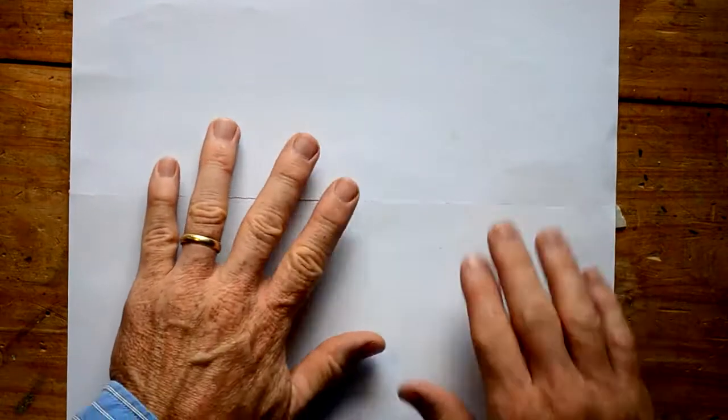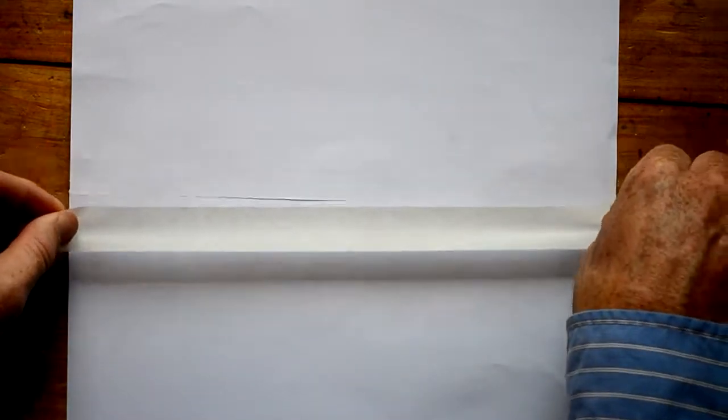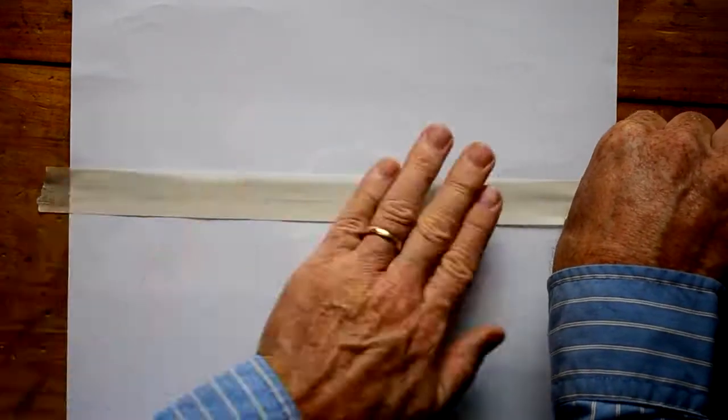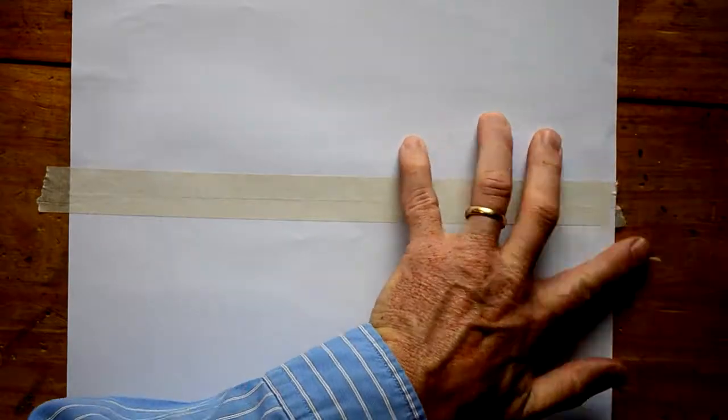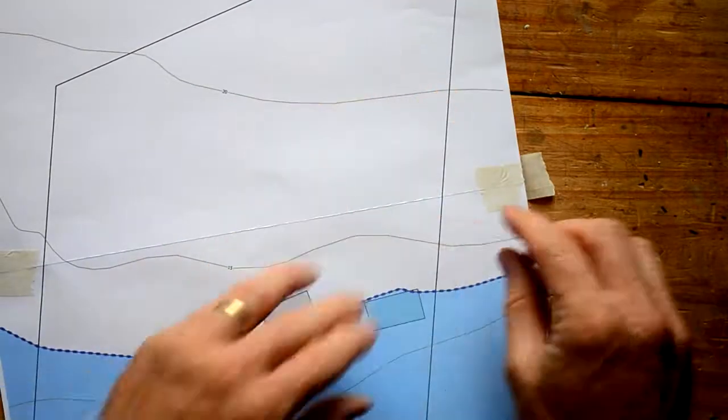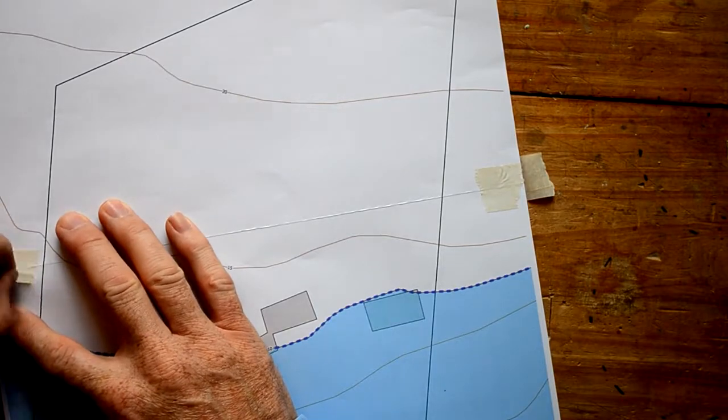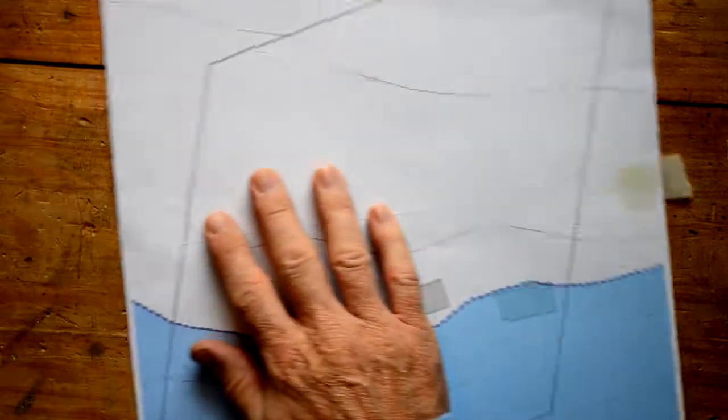There's two. We flip that over and then we're just going to take a long strip of masking tape and put it over that cut edge. Smooth it down.